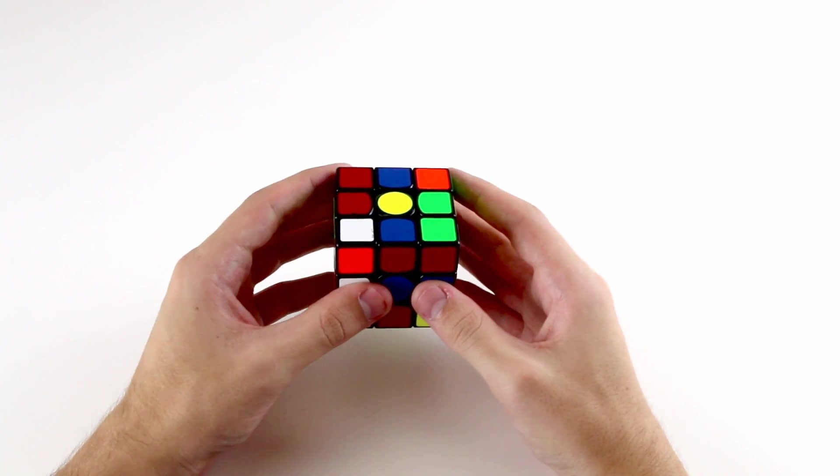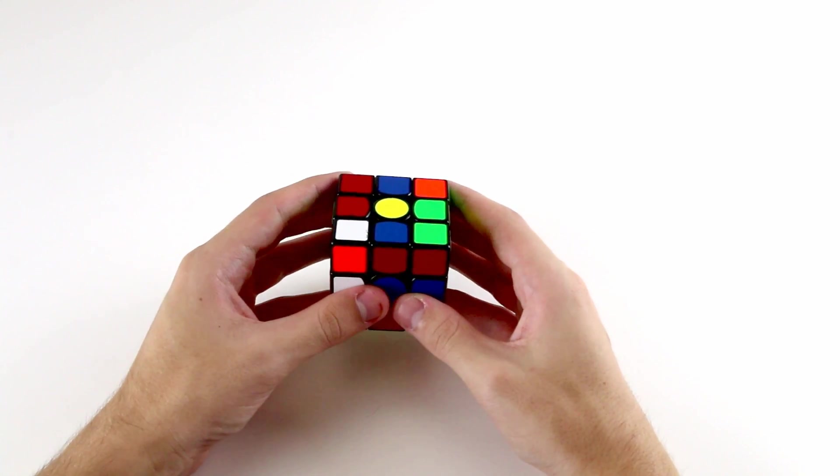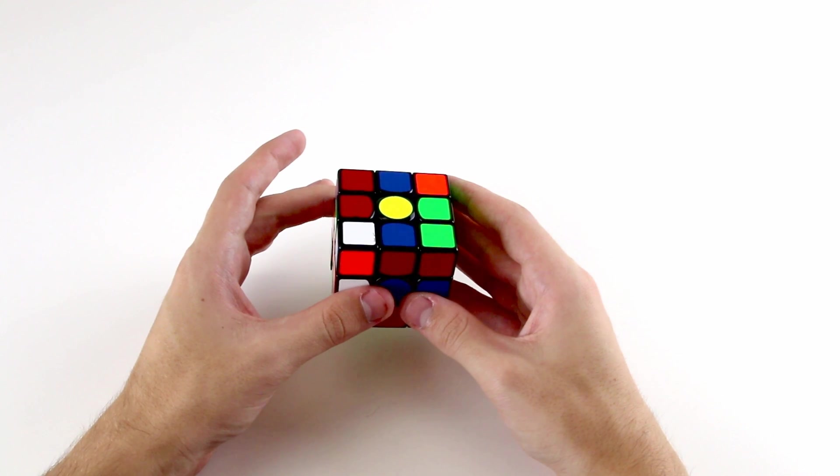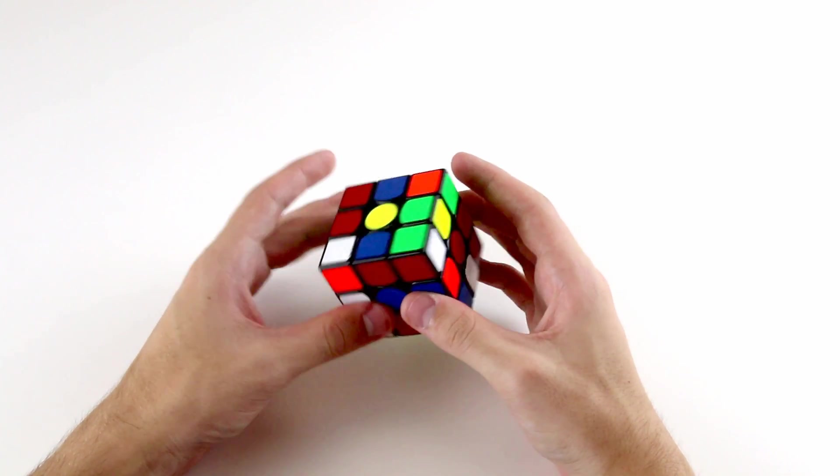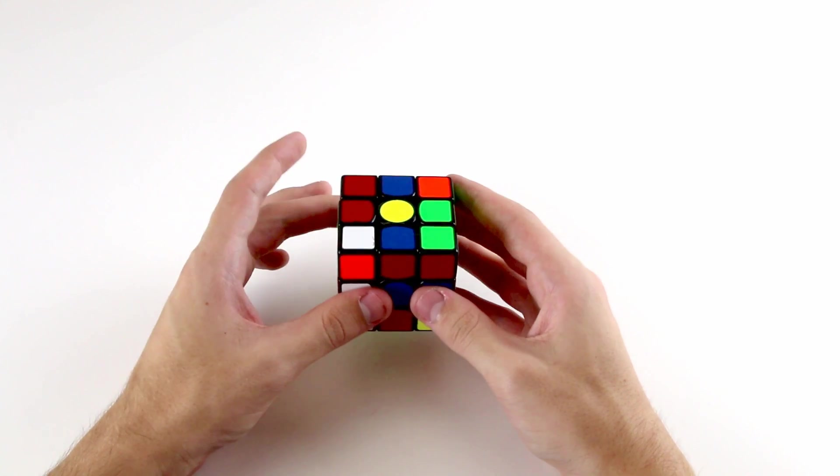The first tip I can give you is to use unlimited inspection and then just gradually reduce that. Literally just get a cube, memorize your cross solution, and then before you execute it, look for a corner and edge pair and figure out how they'll be affected by the moves you do to solve the cross and where they'll end up.